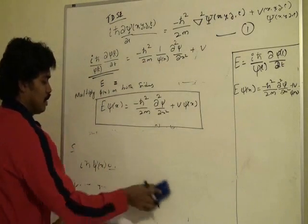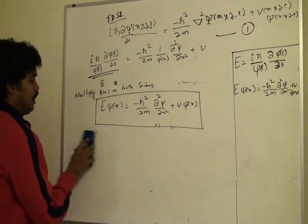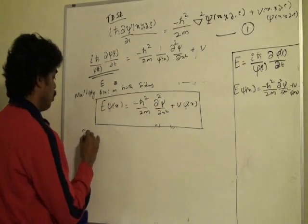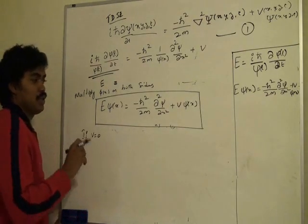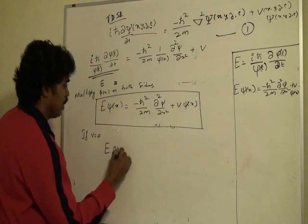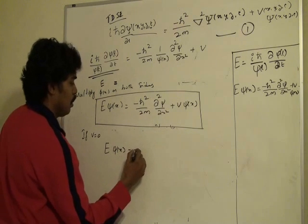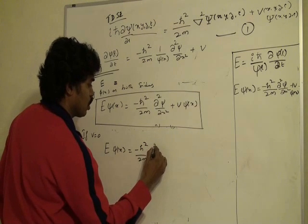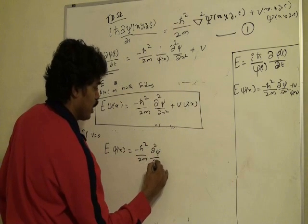So I want to simplify this. I want to simplify this if potential is 0. If potential energy of the system is 0, then this becomes E ψ(x) equal to minus h bar square by 2m d²ψ/dx². In other words,